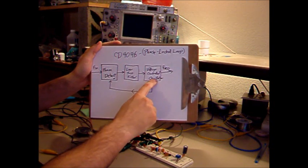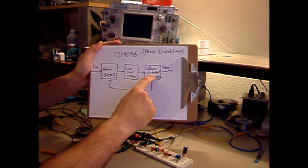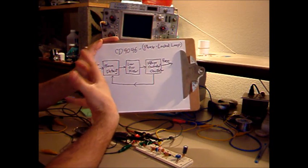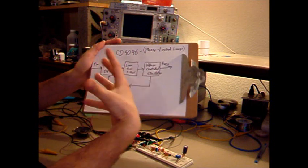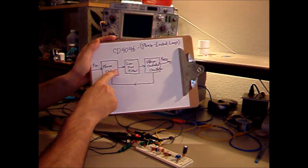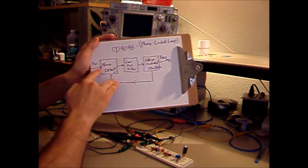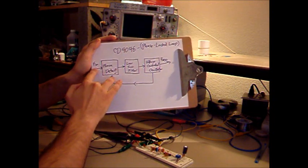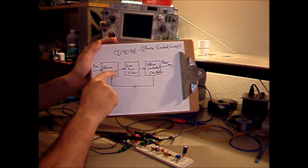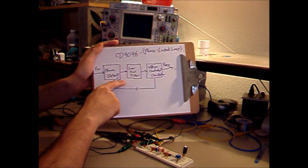The voltage-controlled oscillator feeds back into the phase detector. The phase detector compares the VCO to a different input frequency — some sort of analog signal, something you need to recover, or an RF transmission. It looks at the frequency coming in and the frequency from the VCO, and makes a judgment as to whether the two signals are in phase, or if one is a higher frequency than another, and it produces an error signal. If the VCO frequency is too low or behind in phase, the phase detector produces a positive error voltage. If the VCO is too high or ahead, it produces a low error voltage.